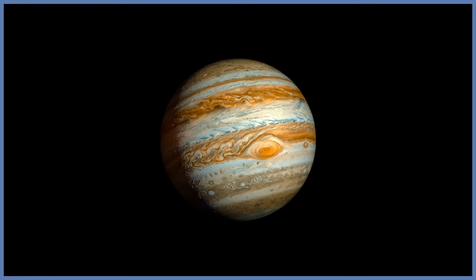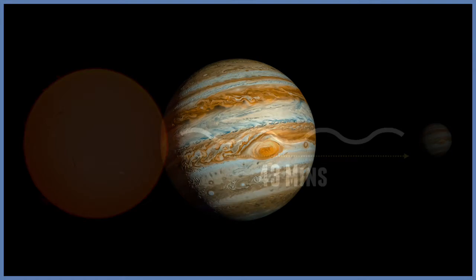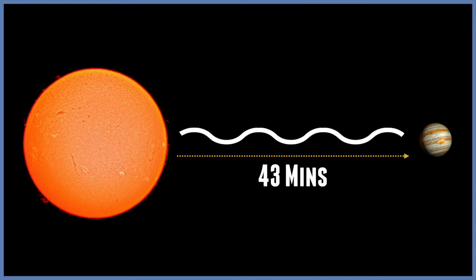Let's go to the largest planet in the solar system, Jupiter. Jupiter is more than 5 times further from the Sun than Earth is, which means it takes 43 minutes for the Sun's light to reach Jupiter.